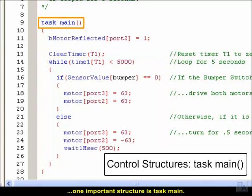One important structure is task main. Every Robot C program includes a special section called task main. This control structure determines what code the robot will run as part of the main program.